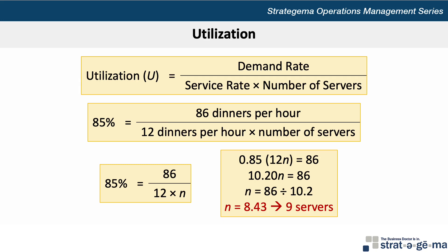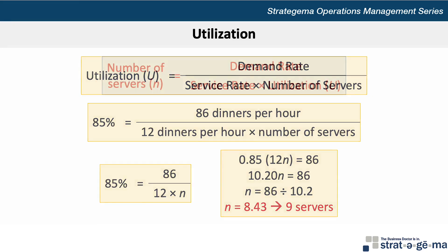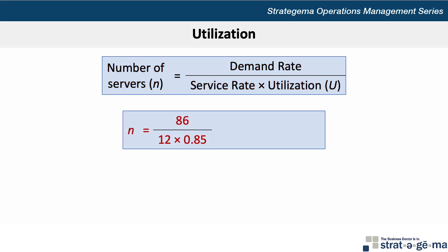We can shortcut this by modifying the utilization formula to solve for the number of servers n as follows: n equals the demand rate divided by the service rate times the utilization rate u. So n equals 86 dinners per hour divided by 12 dinners per hour times 85% target utilization, which equals 8.43 or 9 servers.